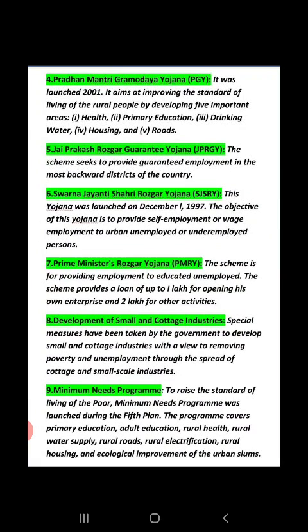Next is Jai Prakash Rozgar Guarantee Yojana. This Yojana was started to provide guaranteed employment to the most backward districts of the country. Then, Swarna Jayanti Shahari Rozgar Yojana — this poverty alleviation program was for the people of urban areas. This policy was launched on December 1, 1997, and its objective was to provide self-employment or wage employment to urban unemployed or underemployed persons.